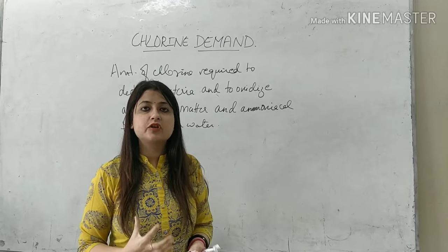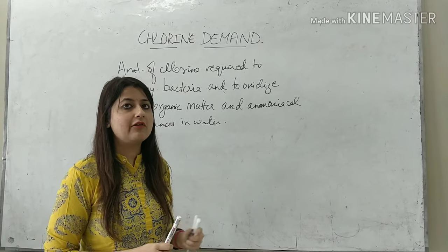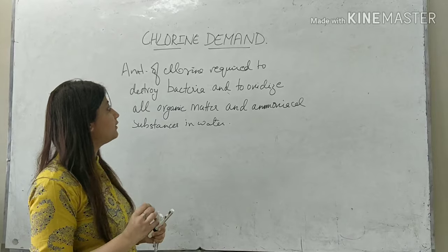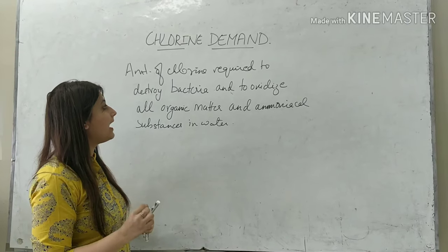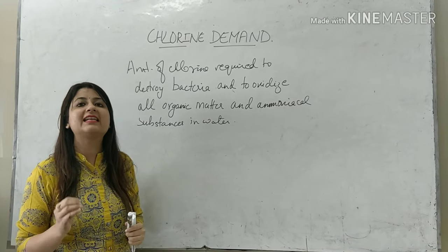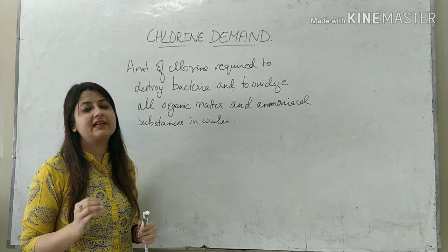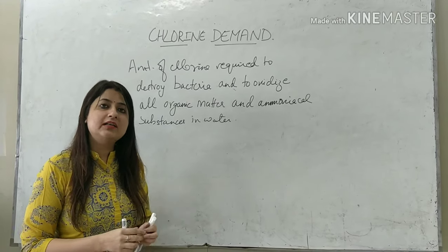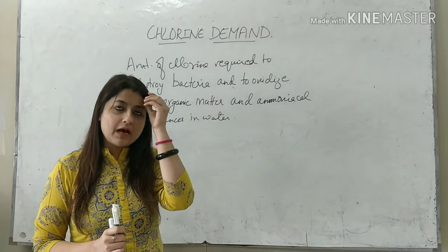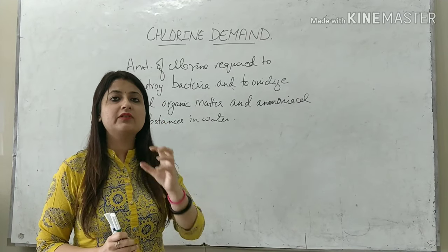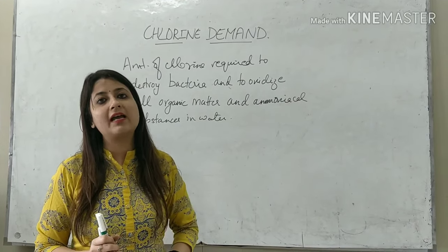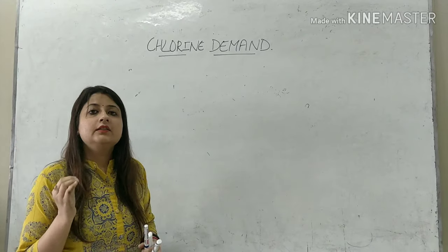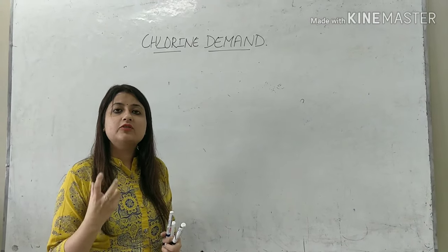What is the definition of chlorine demand? It is the amount of chlorine which is required to destroy bacteria and to oxidize all organic matter and ammoniacal substances in water. In other words, it is simply the amount of chlorine required to disinfect a particular amount of water.